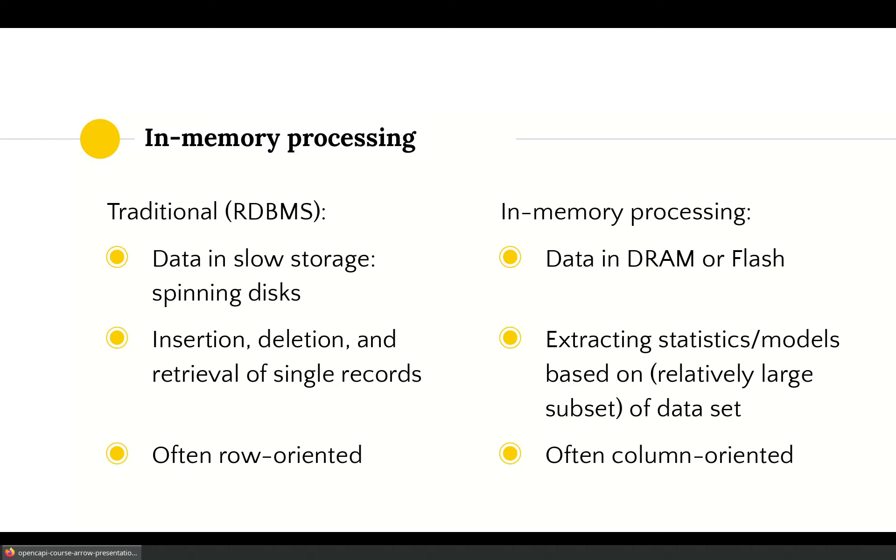Traditional relational databases are typically optimized for insertion, deletion and retrieval of single records, not for large scale analytics. In-memory processing focuses more on extracting statistics or deriving models based on a relatively large subset of the data or the whole dataset. Finally, traditional systems store data in a row-oriented fashion while in-memory processing systems store data in a column-oriented fashion. What that means exactly is something we will learn in the next couple slides.